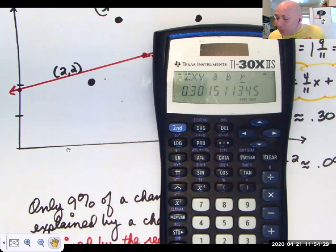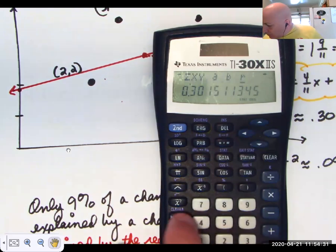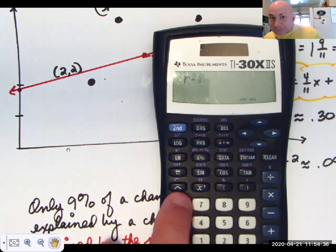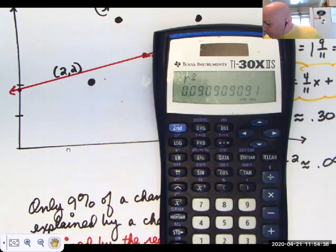Now, if I want to find out what r squared is, I just take that 0.30 and square it. And I get approximately 0.09.